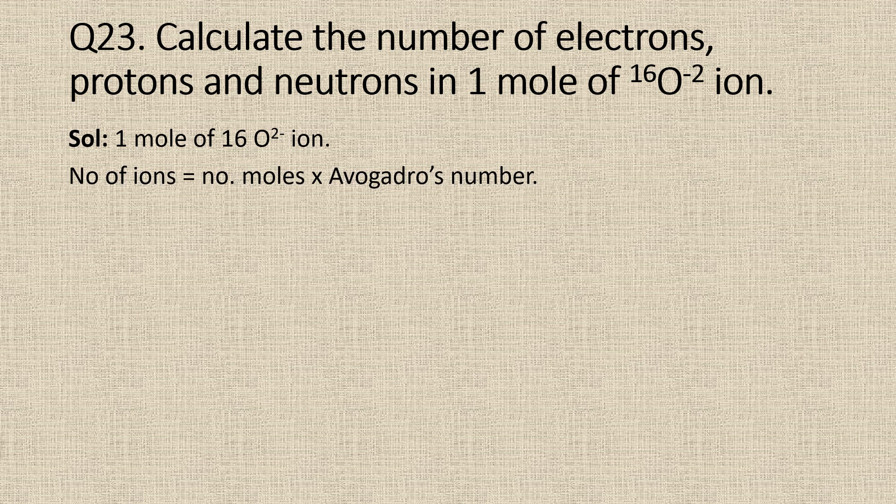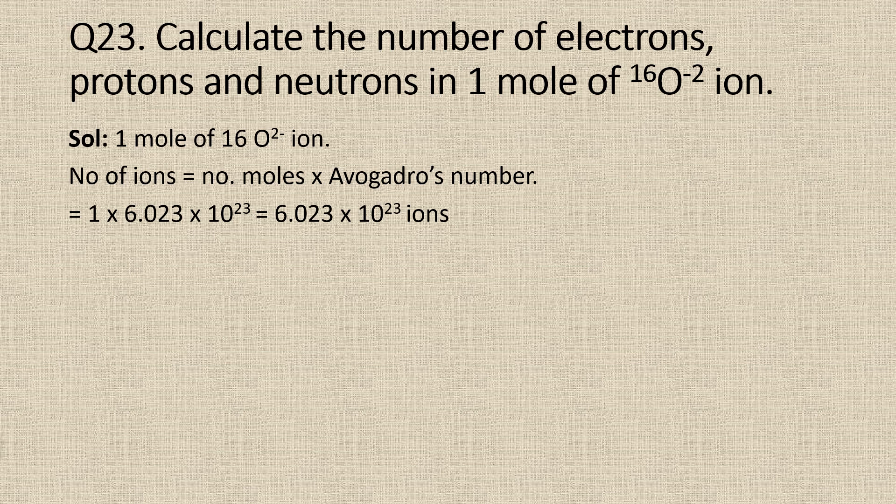Each O2 minus ion contains 10 electrons, because in a neutral atom of oxygen there are 8 electrons, and in this O2 minus ion we have 2 units of negative charge. So the total number of electrons in each O2 minus ion is 10.